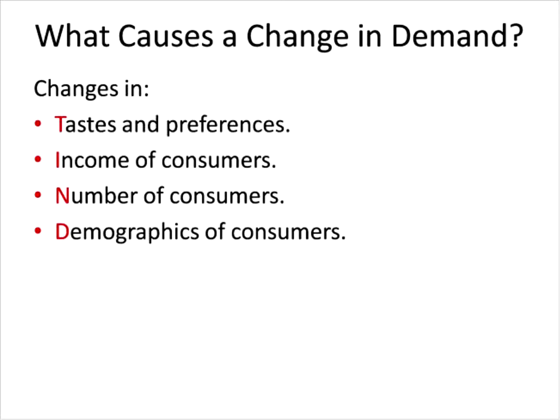D stands for demographics. As a population of consumers changes in age or ethnicity, the consumers may buy more of one good and less of another. For example, our current aging population is demanding more health care, so health care demand is shifting to the right. This factor is very similar to taste and preferences and number of consumers, but it fits the TINDER acronym.